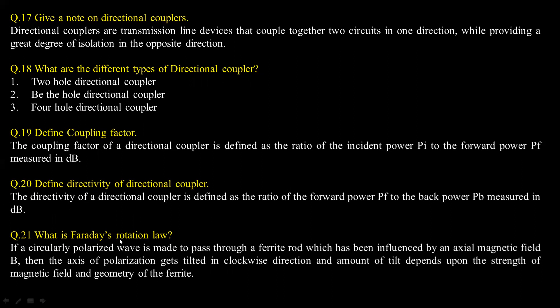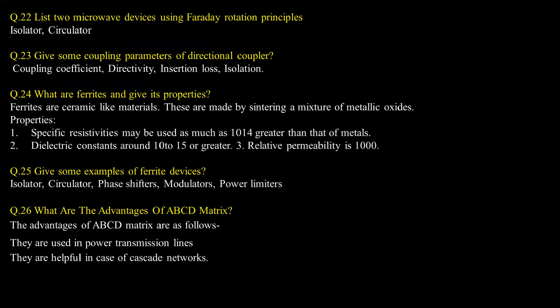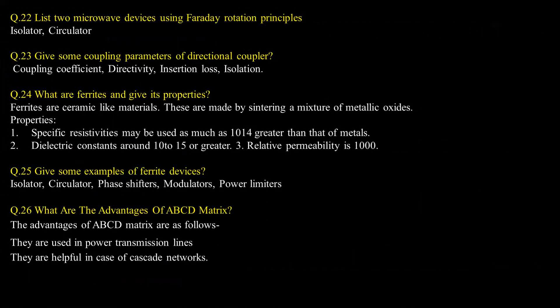What is Faraday's rotation law? If a circularly polarized wave is made to pass through a ferrite rod which has been influenced by an axial magnetic field B, then the axis of polarization gets tilted in clockwise direction and amount of tilt depends upon the strength of magnetic field and geometry of the ferrite. List two microwave devices using the Faraday rotation principle: isolator and circulator.